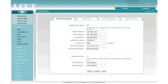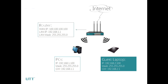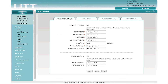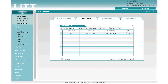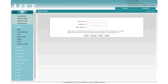Now when any guest device connects to the router, it will automatically obtain an IP address in the subnet 192.168.2.x. Note that if new office devices need to be added to the office subnet, first go to the DHCP Server page, click Static DHCP, and click Add to add them.